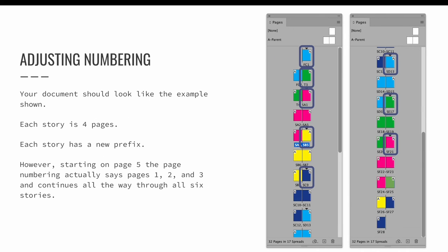I went ahead and created sections SC, SD, SE, and SF, so that I have a new section for each of my six short stories. Your document should look like the screenshots shown. Each story is exactly four pages and each has a new prefix label. But starting with the fifth page in the document, the numbering starts at page one and continues through page 24, which is the end of the sixth story.